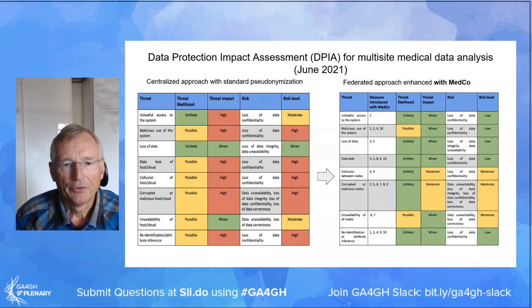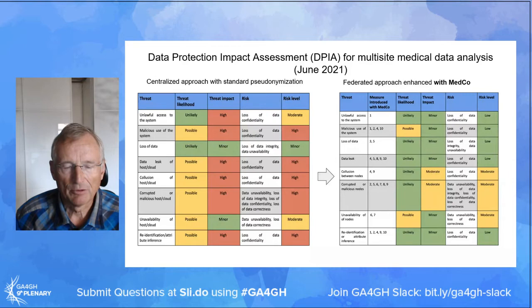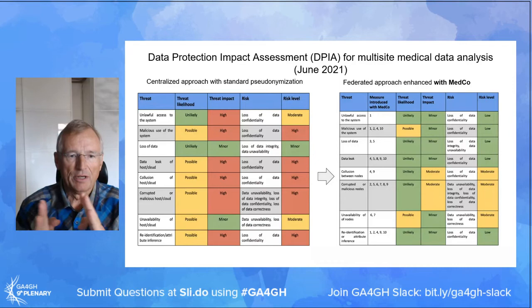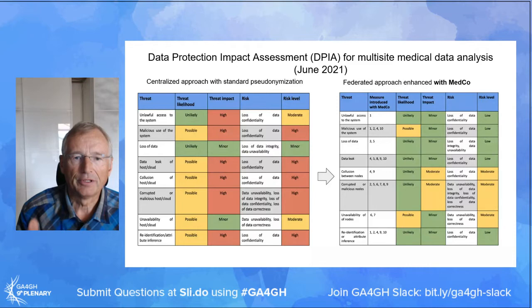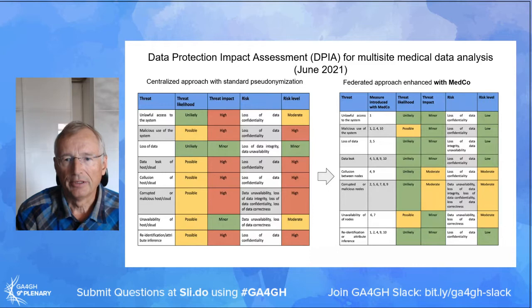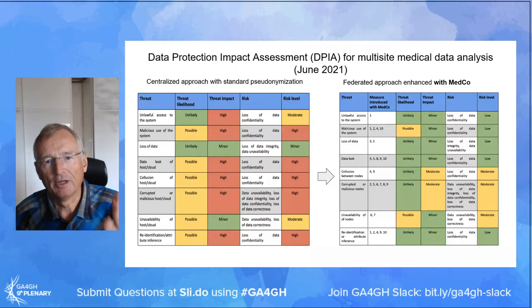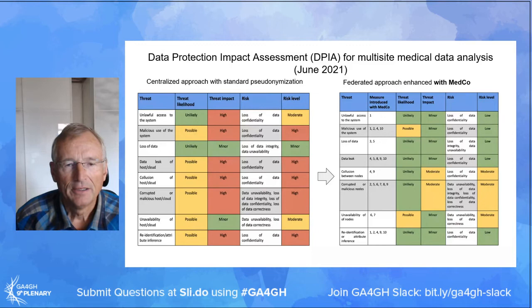We also went through a DPIA — Data Protection Impact Assessment — a pretty thick document showing what changes when introducing such solutions into existing systems. You can see on the left the situation before and on the right after the introduction of this solution. Red is bad and green is good, based on a certain number of criteria.